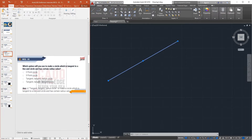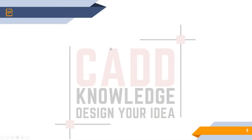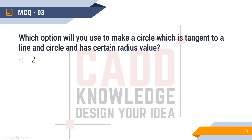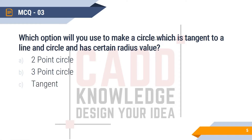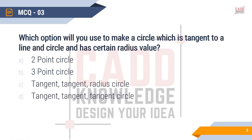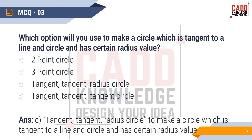MCQ3: Which option will you use to make a circle that is tangent to a line and a circle and has a certain radius value? The four options are: 2-point circle, 3-point circle, Tangent-Tangent-Radius circle, and Tangent-Tangent-Tangent circle. The right answer is Tangent-Tangent-Radius circle.